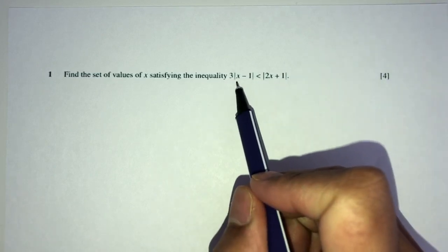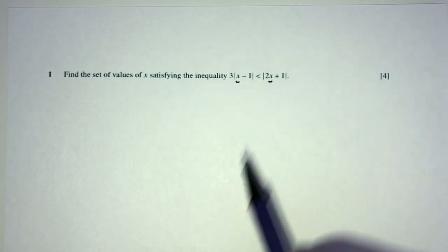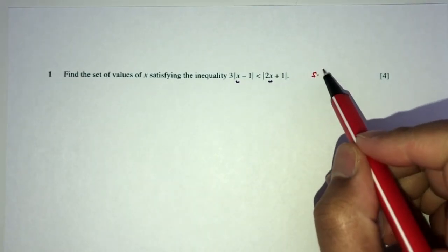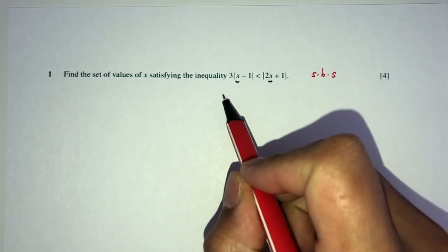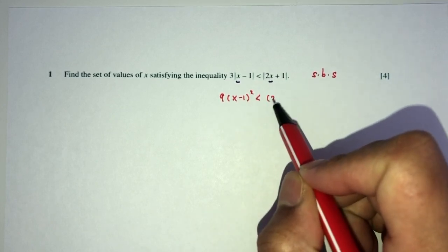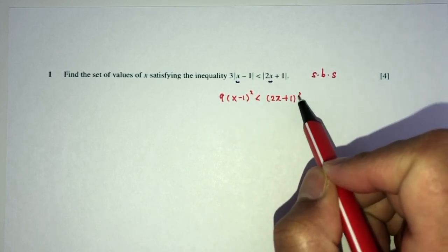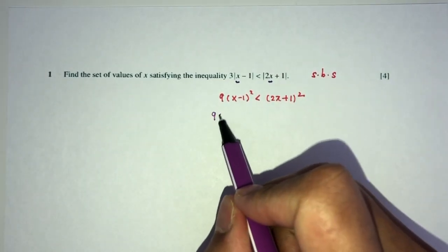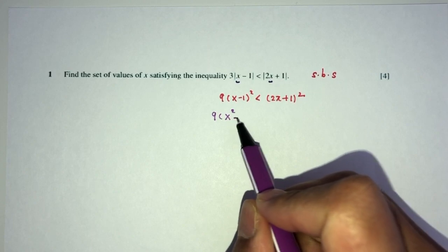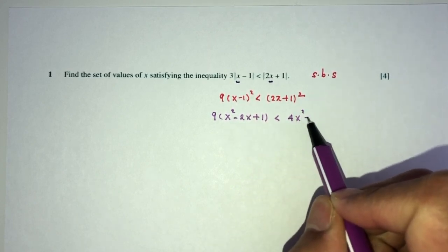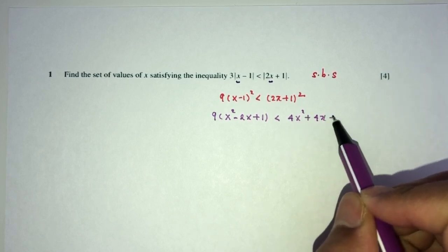First observation, we have x on both sides. We have modulus on both sides, so we can just square both sides. You'll have 9(x-1)² less than (2x+1)². Now, we can expand one by one. You will have 9 over here. That will be x² - 2x + 1 less than 4x² + 4x + 1.